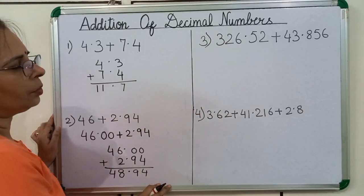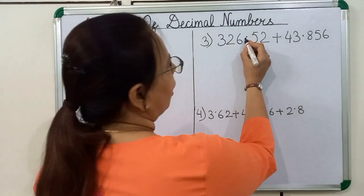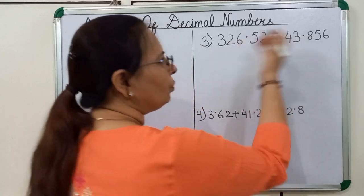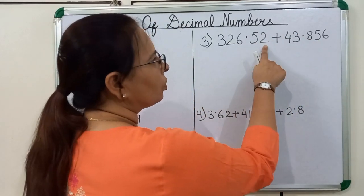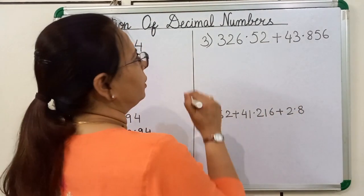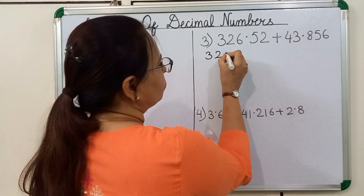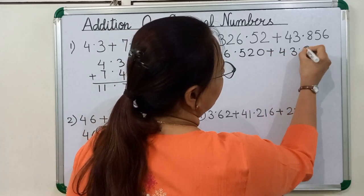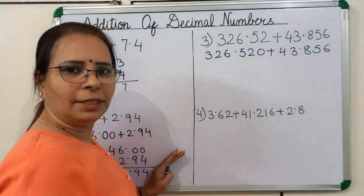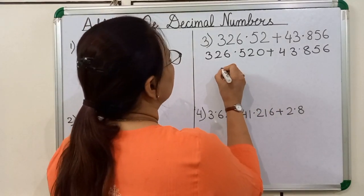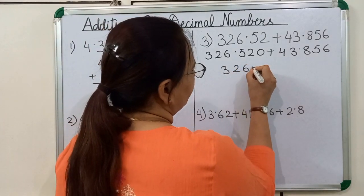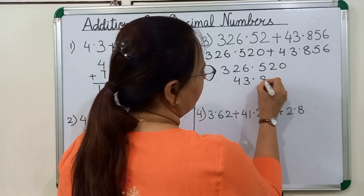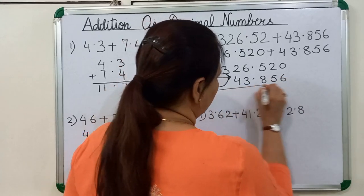Now we will see the next example. You can see here after the decimal there are 2 decimal places, and here 3 decimal places. So we will convert these unlike decimals into like decimals. So 326.52 becomes 326.520, plus 43.856. Now we will arrange these decimal numbers according to their place value: 326.520 and 43.856.